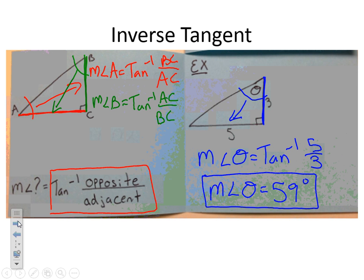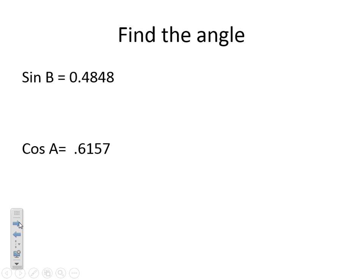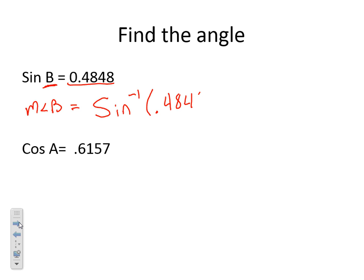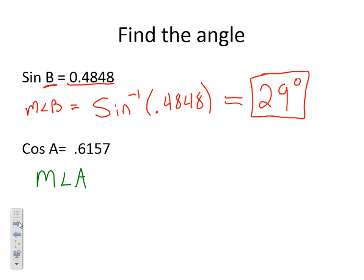I have two more examples for you, ladies and gentlemen. These don't need to be on your foldable, just in your notes. If they say find the angle and give you just a decimal, we find the angle by taking the inverse sine. So the measure of angle B equals inverse sine of 0.4848, which gives us 29 degrees. Do the same for cosine: the measure of angle A equals inverse cosine of 0.6157, which gives us 52 degrees.